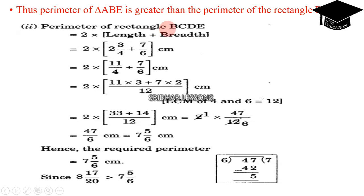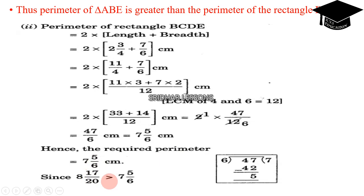Perimeter of rectangle is 2 into L plus B: 2 into 2 and 3 by 4 plus 7 by 6, that is 2 into 11 by 4 plus 7 by 6. LCM of 4 and 6 is 12: 3 into 11 plus 2 into 7 gives 33 plus 14, that is 2 into 47 by 12, equal to 47 by 6. Dividing, remainder is 5, giving 7 and 5 by 6 cm. Since 8 and 17 by 20 is greater than 7 and 5 by 6, the perimeter of triangle ABE is greater than that of rectangle BCDE.